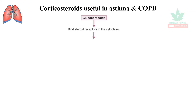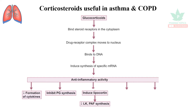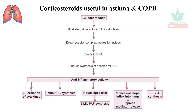Corticosteroids — the glucocorticoids — bind to steroid receptors in the cytoplasm. The drug-receptor complex moves into the nucleus from the cytoplasm and binds to DNA, where it induces synthesis of more mRNAs. This exhibits anti-inflammatory activity through synthesis of several proteins, which contribute to reducing cytokine formation, inhibiting prostaglandin synthesis, inducing lipocortin, decreasing leukotriene activity, and reducing platelet activating factor synthesis. It also reduces eosinophil influx into the lungs and decreases the inflammatory mediator IL-3 in the respiratory tract.